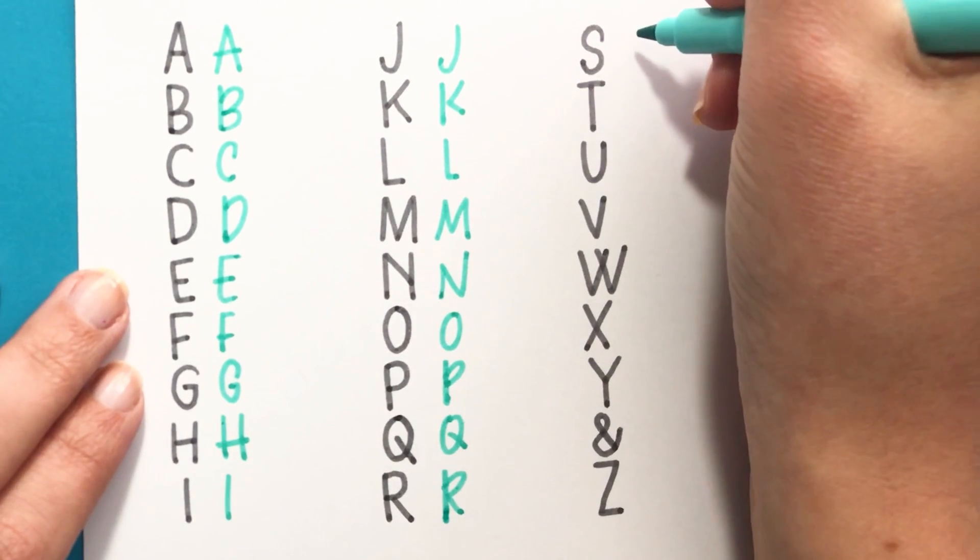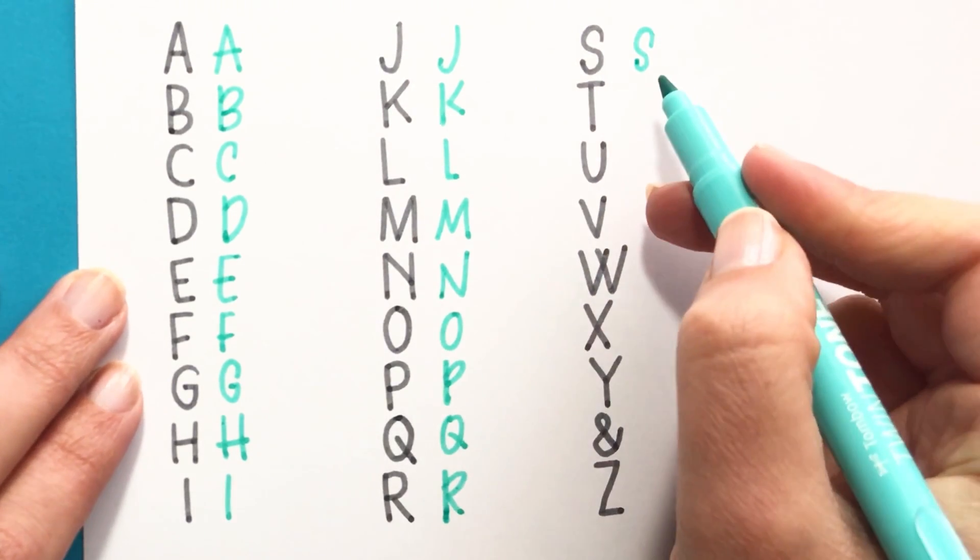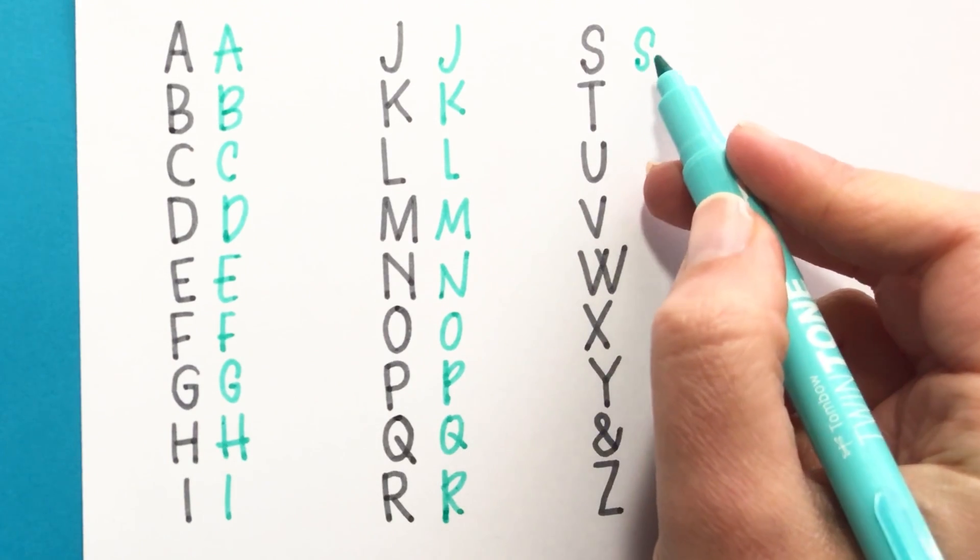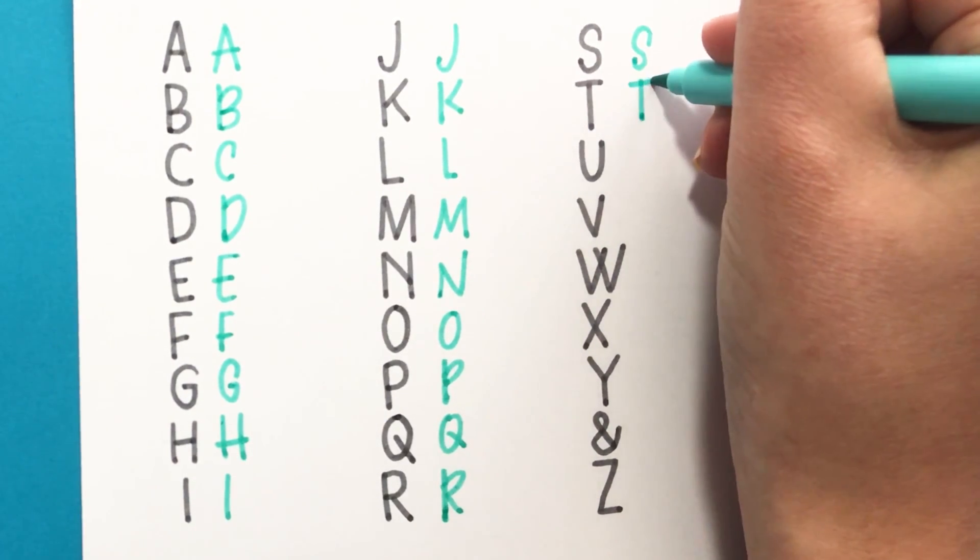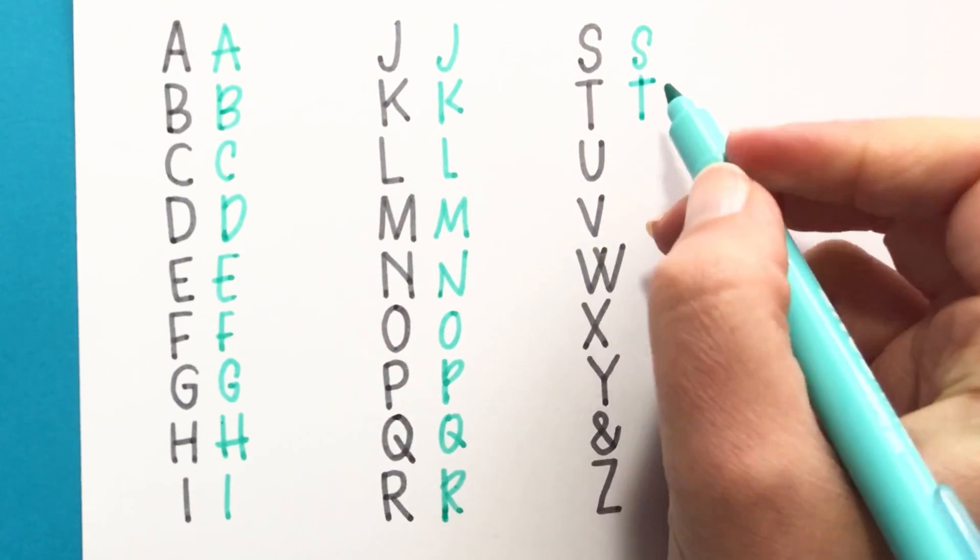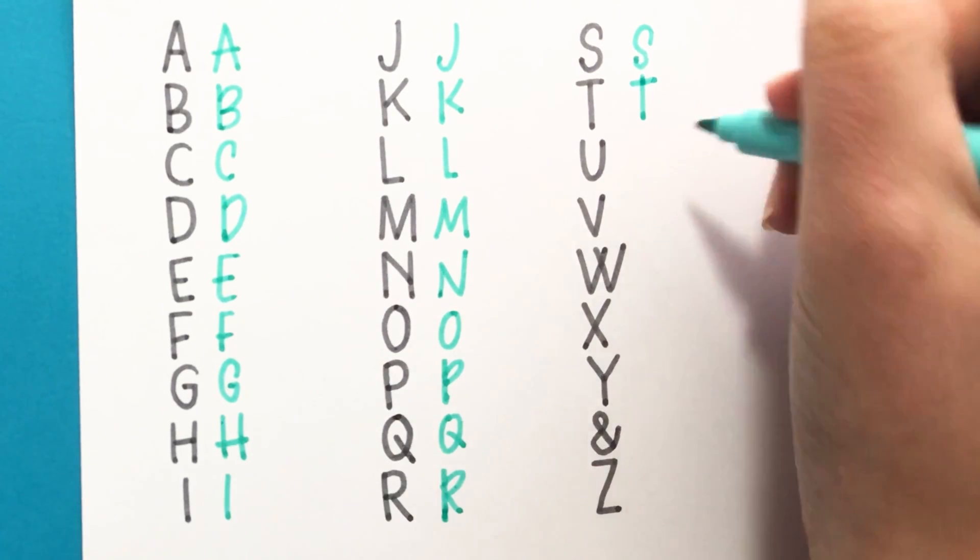For the S it's basically instead of making them symmetrical, you can make—I make my top bigger or you can make the bottom bigger. T I just like to show a little bit of that crossbar or a little bit of the stem on top of the crossbar, so cross it a tiny bit lower.